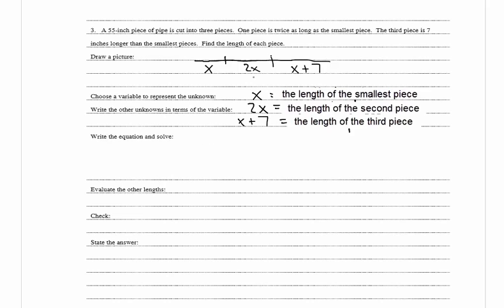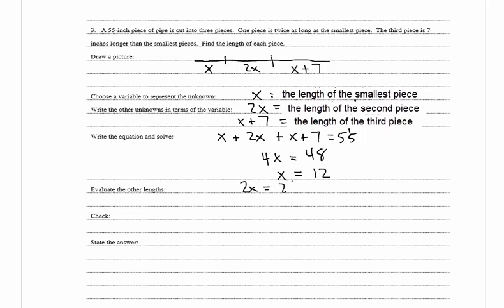Now we write the equation and solve. The sum of all pieces equals 55, so x plus 2x plus (x plus 7) equals 55. Combining like terms and subtracting 7 from both sides gives 4x equals 48. So x equals 48 divided by 4, which is 12. Finding the other lengths: 2x equals 2 times 12 which is 24, and x plus 7 equals 12 plus 7 which equals 19.